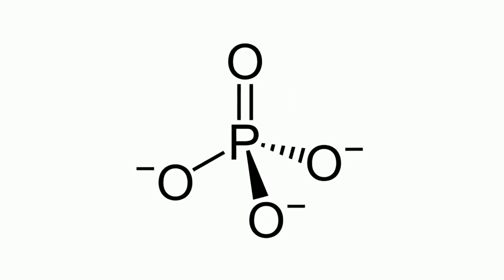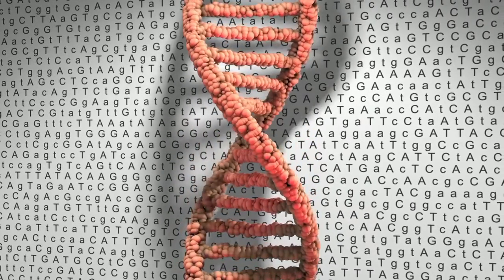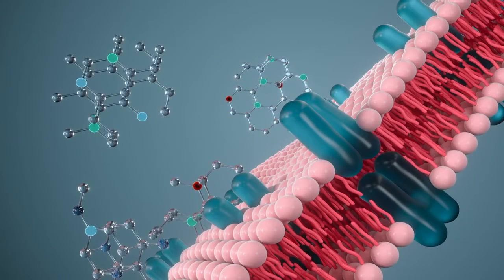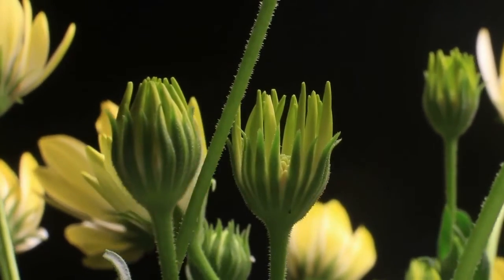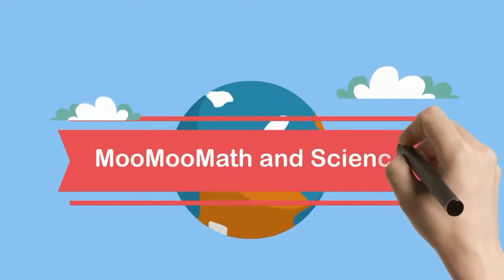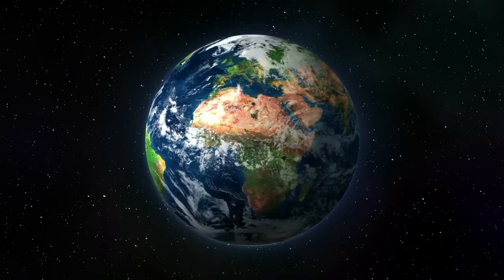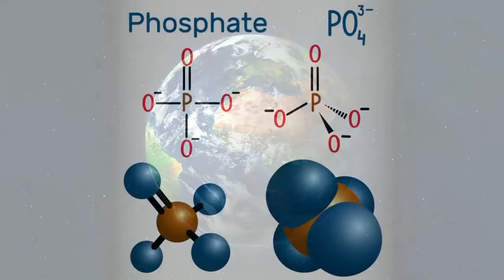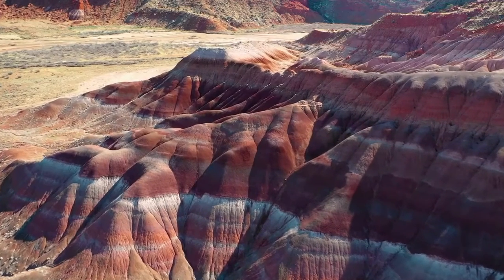Phosphorus is an essential nutrient for living organisms. It's a building block of nucleic acids like DNA and of phospholipids that form our cell membranes. It's also essential for plant growth. In the natural world, phosphorus is never encountered in its pure form, but only as phosphates, which consist of a phosphorus atom bonded to four oxygen atoms. Phosphate compounds are found in sedimentary rocks.